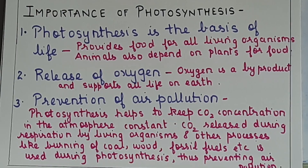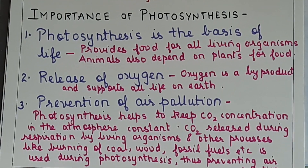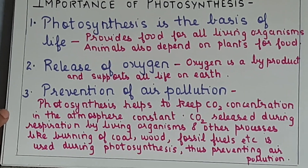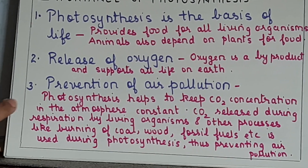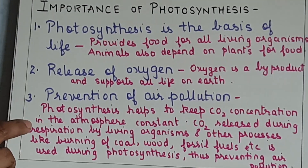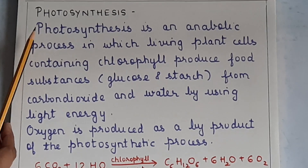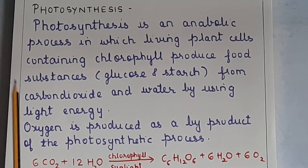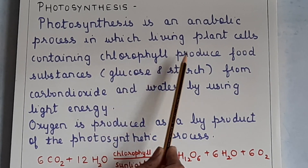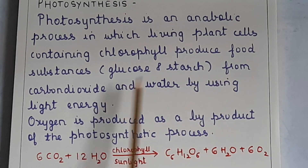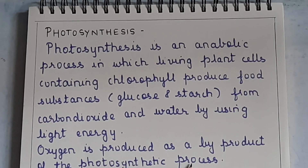Photosynthesis is the only process in which oxygen is released as a byproduct, and it also helps in prevention of air pollution because it consumes carbon dioxide generated in the atmosphere due to pollution, vehicular emissions, etc. The definition: photosynthesis is an anabolic process in which living plant cells containing chlorophyll produce food substances — glucose and starch — from CO2 and water using light energy, and oxygen is produced as a byproduct. The equation: 6CO2 + 12H2O → C6H12O6 + 6H2O + 6O2, with chlorophyll and sunlight on the arrow.